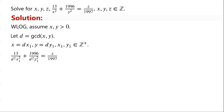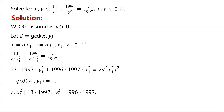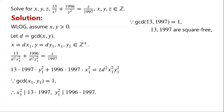To remove the fractions, we multiply the equation by 1997 times d squared times x1 squared times y1 squared. Then the equation becomes: 13 times 1997 times y1 squared, plus 1996 times 1997 times x1 squared, equals z times d squared times x1 squared times y1 squared. Because the greatest common divisor of x1 and y1 is 1, x1 squared must divide 13 times 1997, and y1 squared must divide 1996 times 1997.